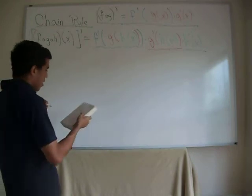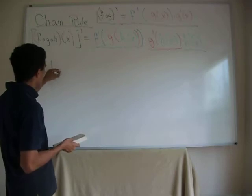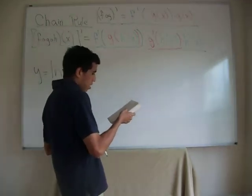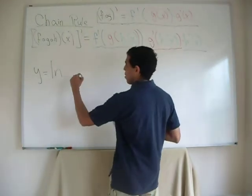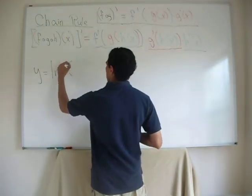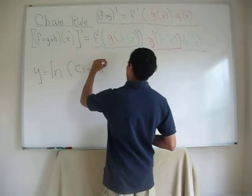So we have right here y equals logarithmic, natural logarithmic number of, where was it? Oh, here it is. Natural log of cotangent of x squared.